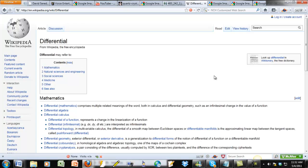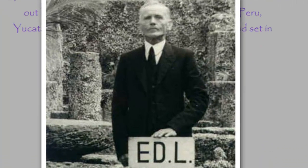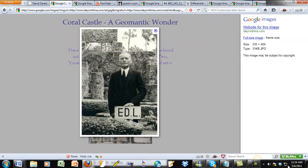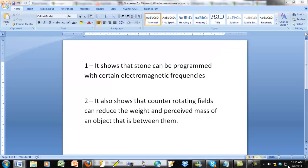These differentials are the mathematical ratios of the difference between the sizes of the objects. In the example with the counter-rotating fields, it is the size difference of the spinning objects and their opposing rotations which are the key to forming a gateway, if you will, to this energy. So how does this gateway differential technology apply to Ed? It actually applies in a couple different ways. First, it shows us that stone can be programmed with certain electromagnetic frequencies. And secondly, it also shows, as you will soon see, that counter-rotating fields can reduce the weight and perceived mass of an object that is actually between them.